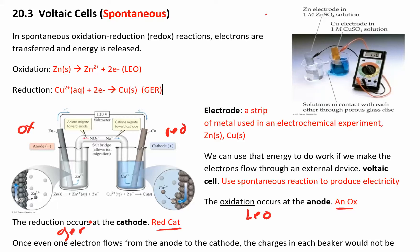Put them in alphabetical order if that helps: A then C, anode on the left, cathode on the right. The anode is negative because during oxidation you are losing electrons. In this case, solid zinc breaks down into zinc ions and electrons, so you start building up electrons over here. Those electrons flow spontaneously from the anode to the cathode — they only go spontaneously in one direction.